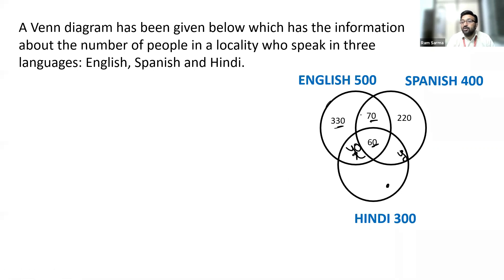Let it be Y. Let us try to find the value of Y now. 70 plus 220 is 290. 290 plus 60 is 350. But it's 400 in total. So the value of Y should be 50.